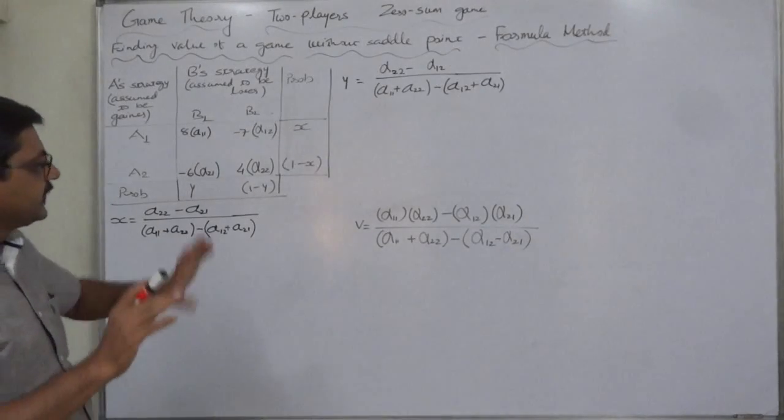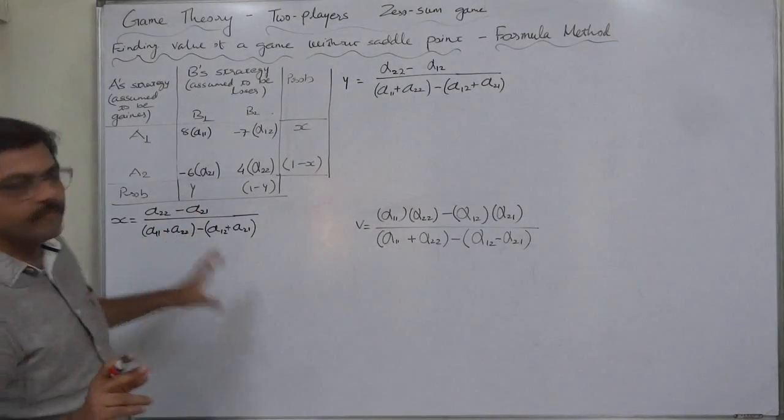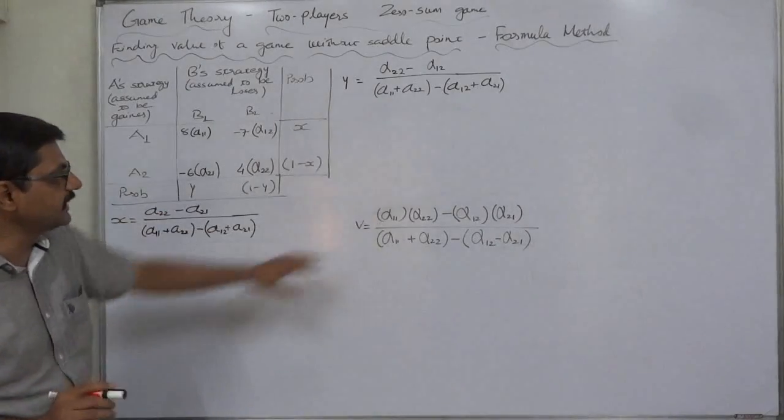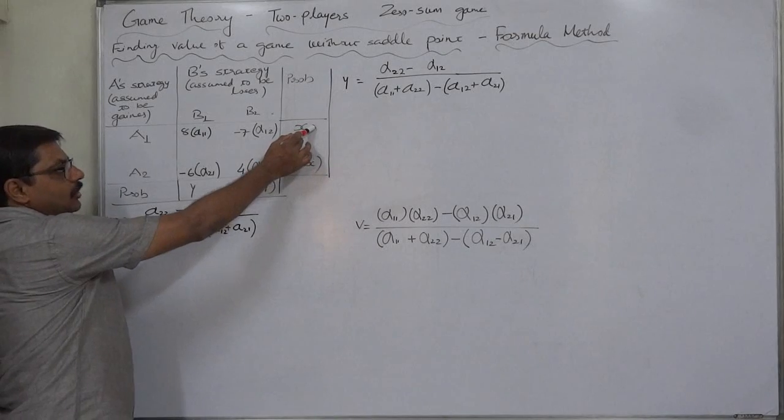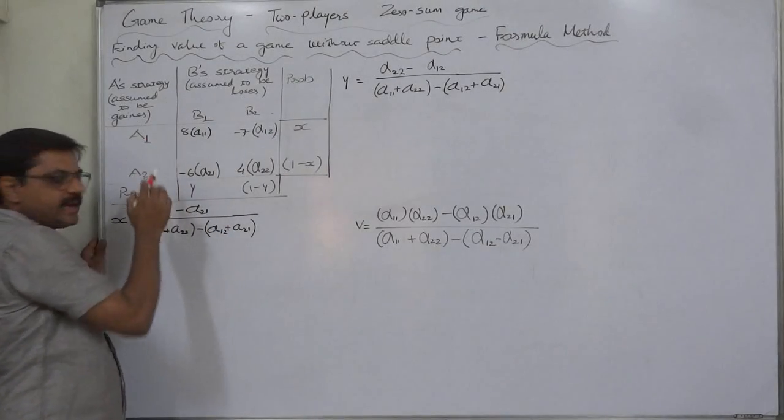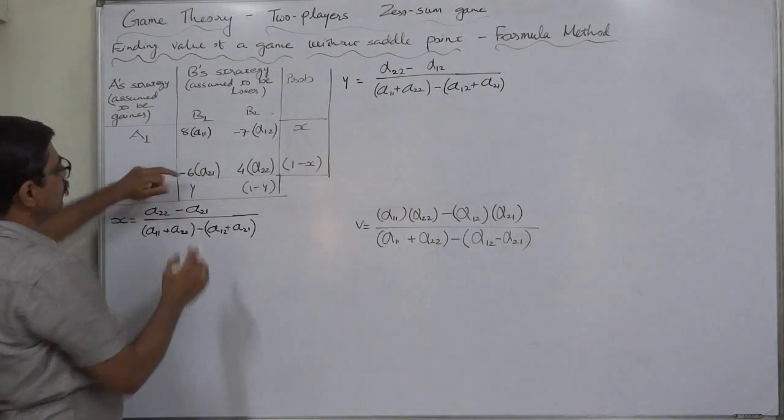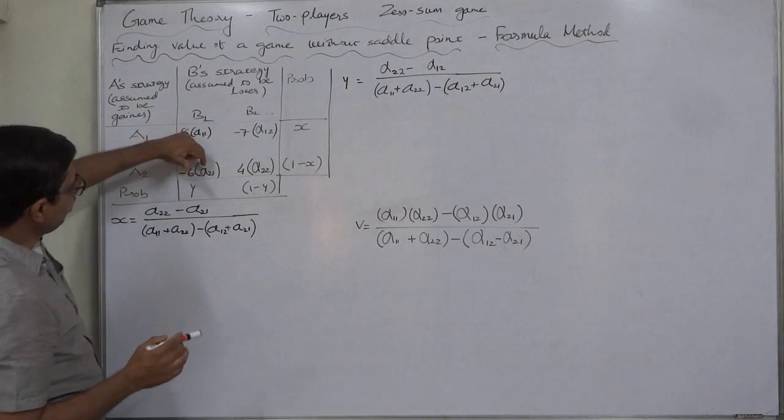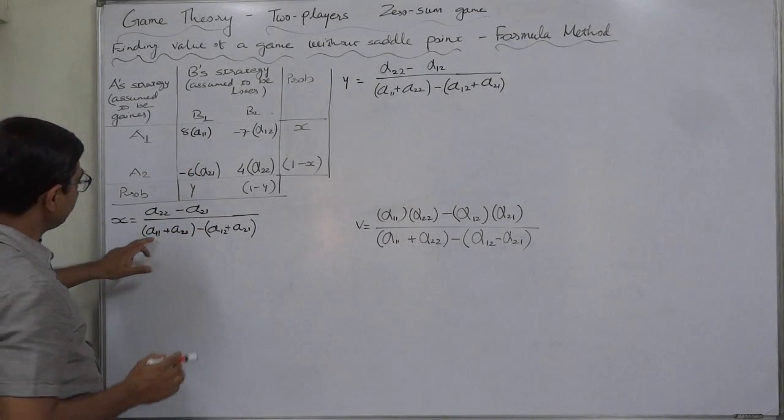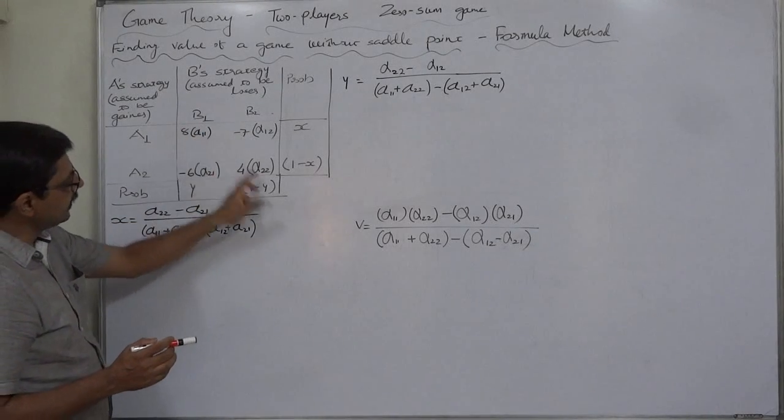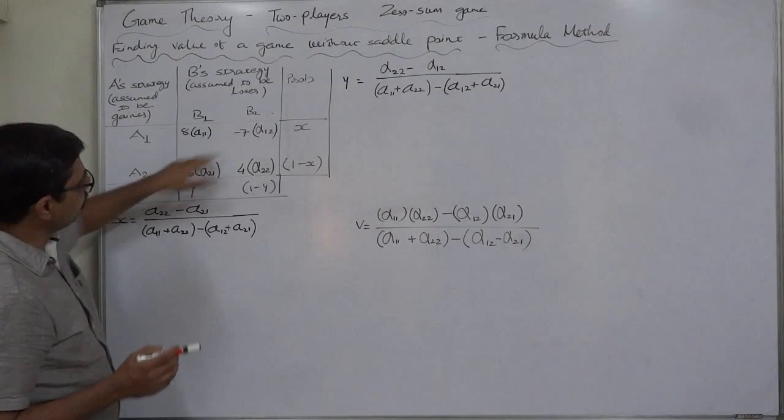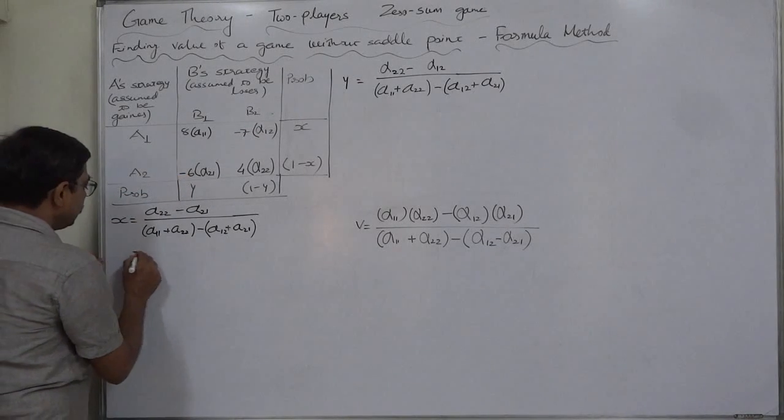Now we just need to use these four values only to find out all these three things. What is the formula of X? That is probability of use of strategy A1 by A. Alpha 2 2 minus alpha 2 1 all divided by alpha 1 1 plus alpha 2 2 minus alpha 1 2 plus alpha 2 1. Let's substitute the values.